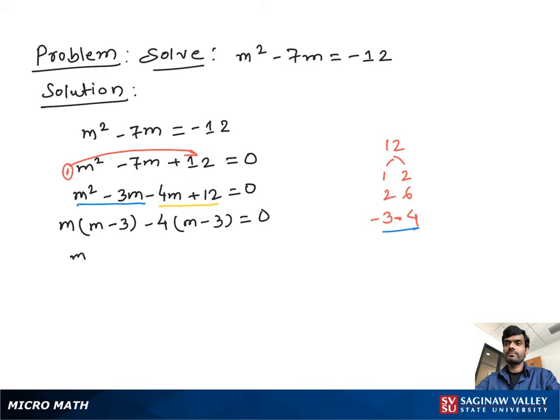Now from both terms, we take m minus 3 as common. Then we have remaining m minus 4, and all equal to 0.